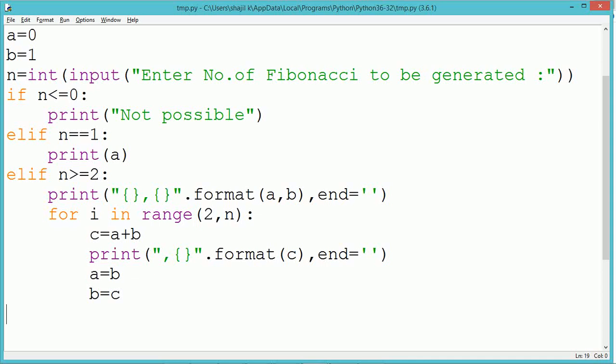Similarly, a takes the value of b and the for loop will keep on repeating so that the new set of Fibonacci numbers will keep on getting generated until the for loop gets completed.